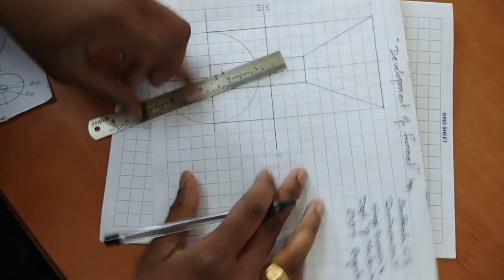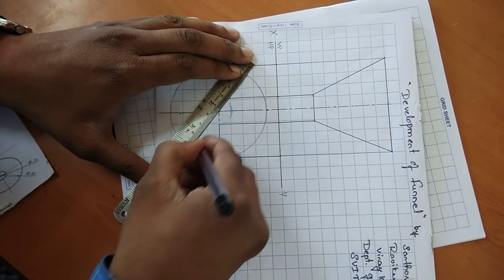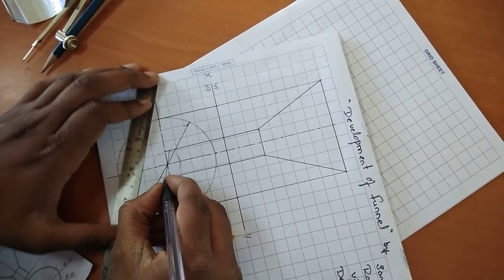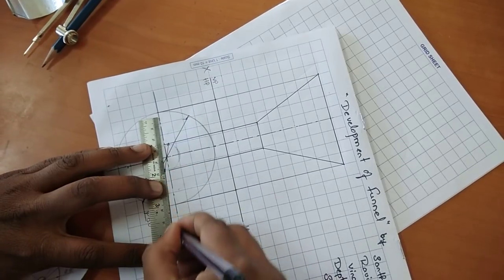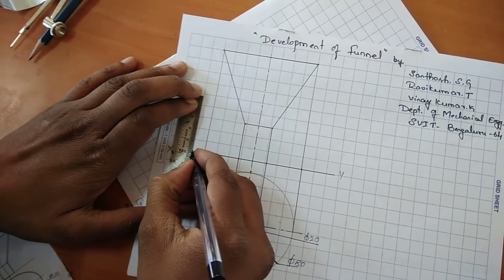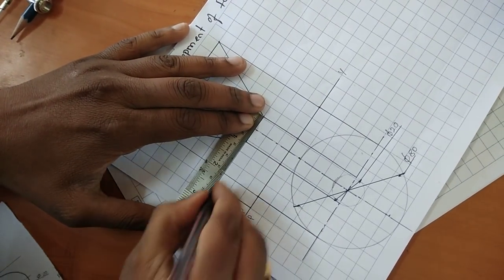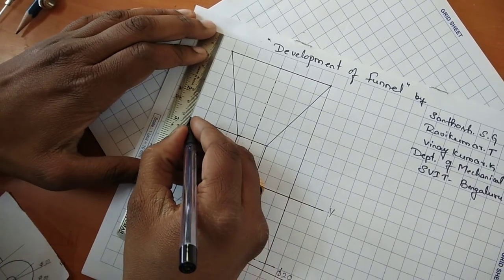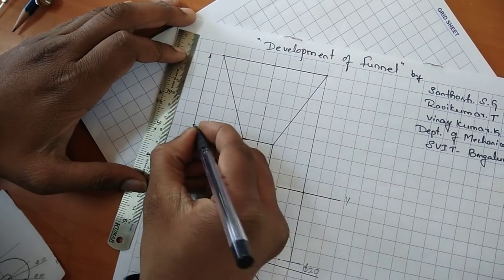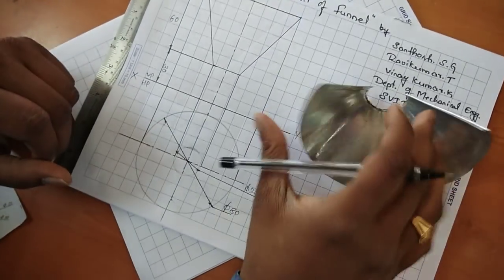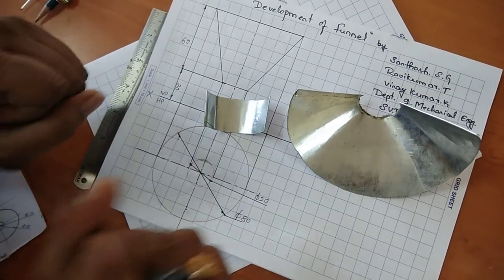This is the given figure, and we need to mention the dimensions: diameter is 80mm, cylinder diameter is 20mm, height of the cylinder is 30mm, and height of the frustum is 60mm. Using this given figure, we need to do the development of the frustum of cone and then the cylinder.